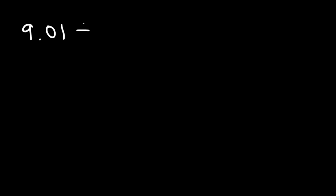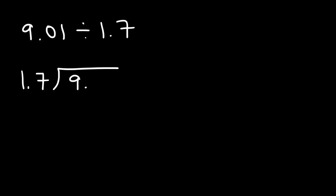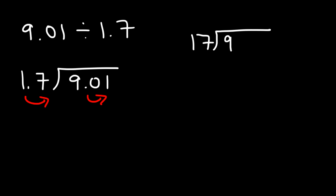Now let's try another example: 9.01 divided by 1.7. We put 1.7 on the outside and 9.01 on the inside. Moving the decimal point one unit to the right for each number, the problem becomes 17 on the outside and 90.1 on the inside.